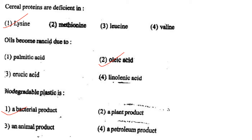Next one: Oils become rancid due to option 1, palmitic acid; option 2, oleic acid; option 3, erucic acid; option 4, linoleic acid. Answer is option 2: oleic acid.